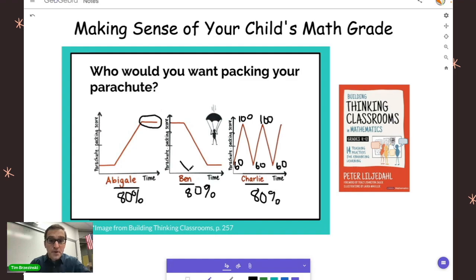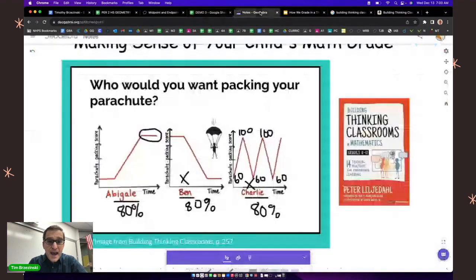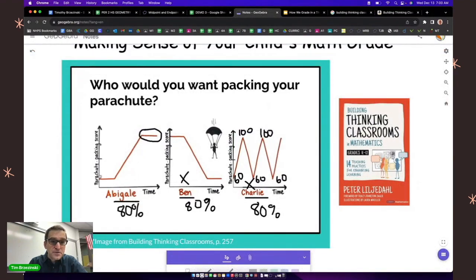Abigail is the one that truly knows how to pack a parachute because of this. I don't want to go with Ben, no way. And I definitely don't want to go with Charlie. You all say you would trust her with packing your parachute. Why? Because she's the one who truly knows the math or truly knows how to pack a parachute. Her grade should be a lot higher than 80 percent, should it not?